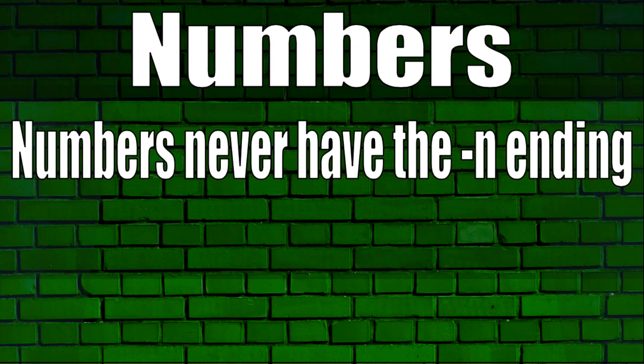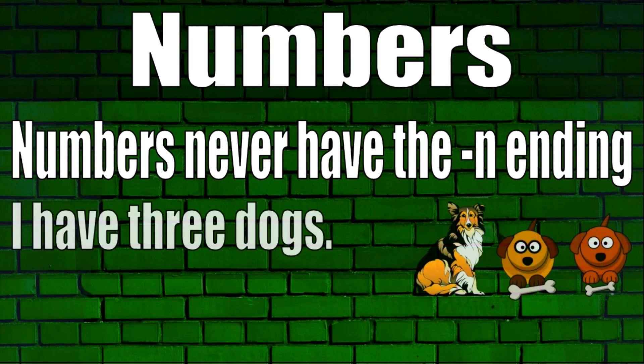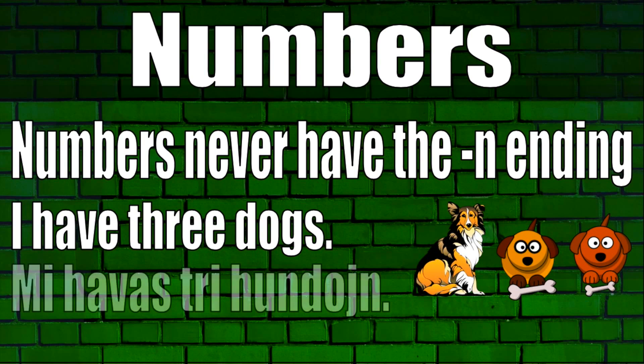Numbers in Esperanto never take the 'n' ending. As an example: 'I have three dogs' is 'Mi havas tri hundojn.'